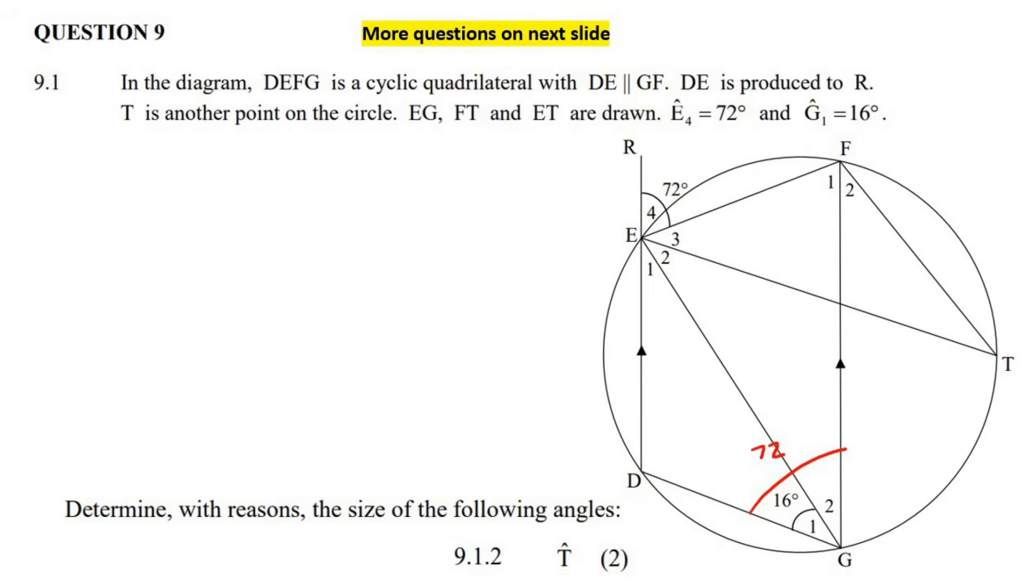So from the previous question, we know that this is 72, so I'm just going to fill in G_2. So G_2, which is this one over here, would obviously just be 72 take away 16, which is 56 degrees. So I'm rather going to fill that in as 56. So this question says, determine for two marks the size of angle T. Here's angle T.